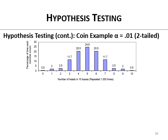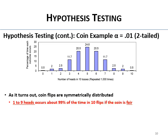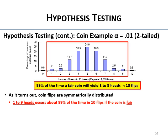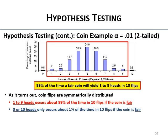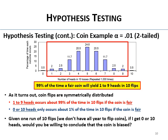Coin flips are symmetrically distributed. From one to nine heads, that's about 99% of the time — what you'd expect from a fair coin in 10 flips. Zero or ten heads — those outcomes only occur about 1% of the time together: 0.5% for zero and 0.5% for ten. So if you flip a coin 10 times and get zero or ten heads, would you be willing to conclude the coin is biased? Hopefully yes — that's really unlikely. That's the equivalent of an alpha of 0.01, two-tailed.